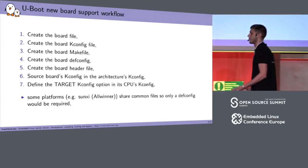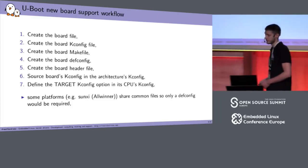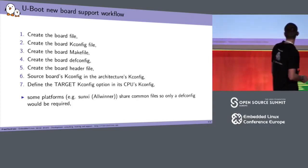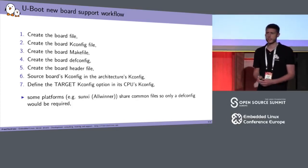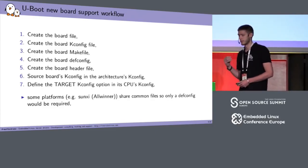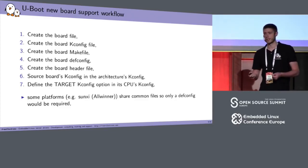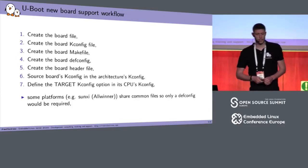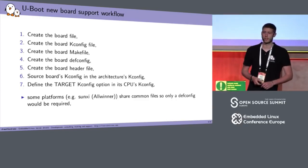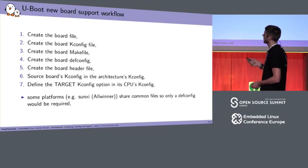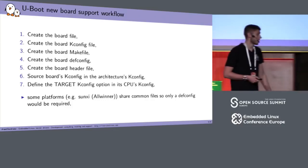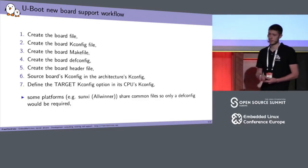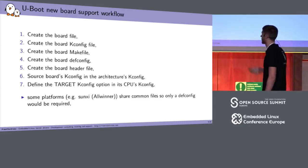You need a workflow so you don't get lost, and it's easy to repeat each time you add support for a new board. First, create the board file. Then create the board Kconfig file. Then the Makefile, the defconfig file, and the header file. Finally, source your board's Kconfig in the architecture's Kconfig and define the target Kconfig option in its CPU. Note that some platforms like Allwinner share common files, so you may only need to create a defconfig.